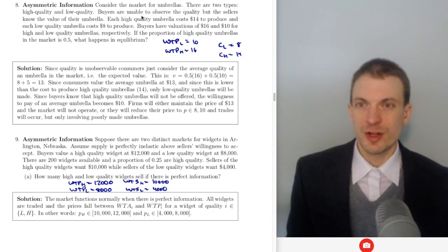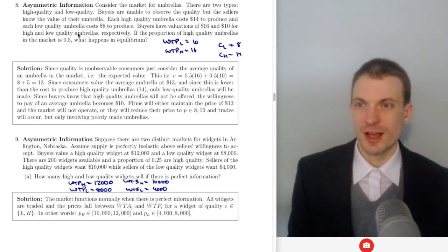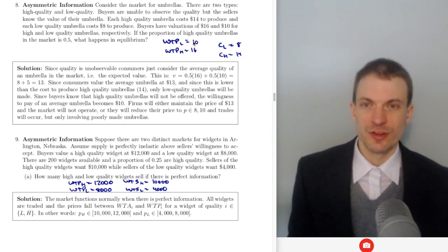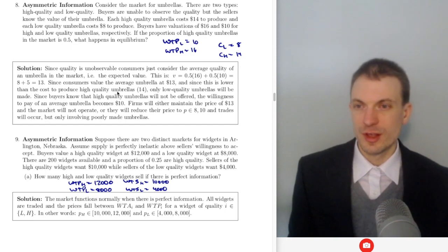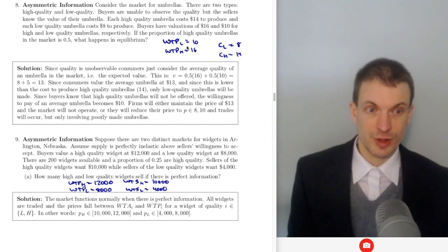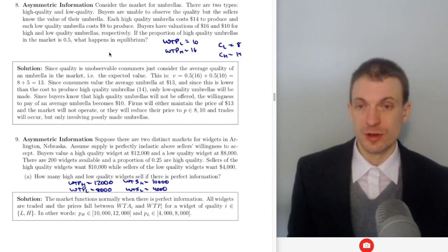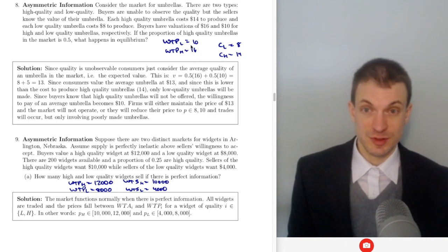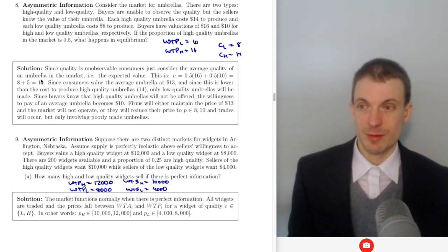Now consider the market for umbrellas. There are two types: high and low quality. Buyers are unable to observe the quality; sellers know the value. Each high quality umbrella costs $14, low quality costs $8. Buyers have valuations of $16 and $10 for high and low quality umbrellas respectively. The fraction of high quality umbrellas is one half. Since quality is unobservable, consumers infer average quality: one half times $16 plus one half times $10, giving a willingness to pay for a randomly selected umbrella of $13.